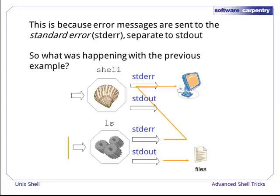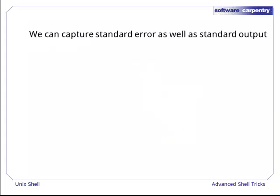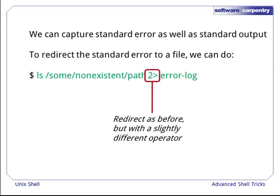Now we see that the standard error is not being redirected like the standard output to a file. Perhaps unsurprisingly, there is a way to capture standard error as well using the Unix shell. So this 2> operator deals with the redirection of standard error only.